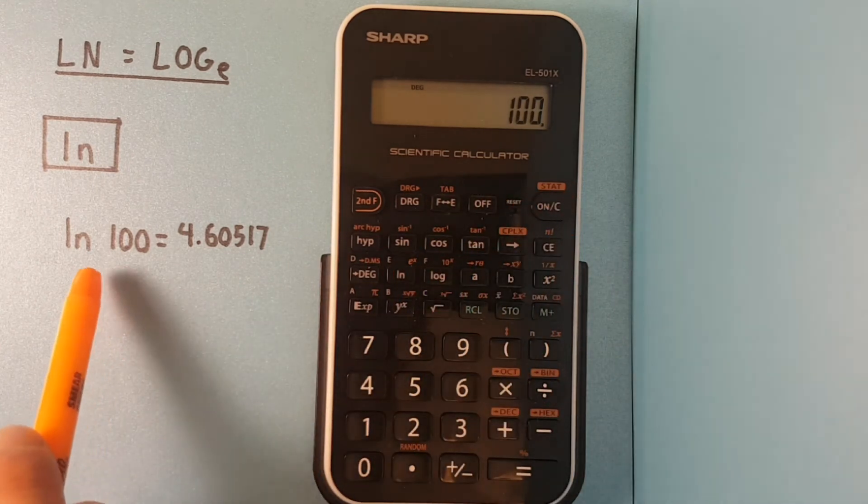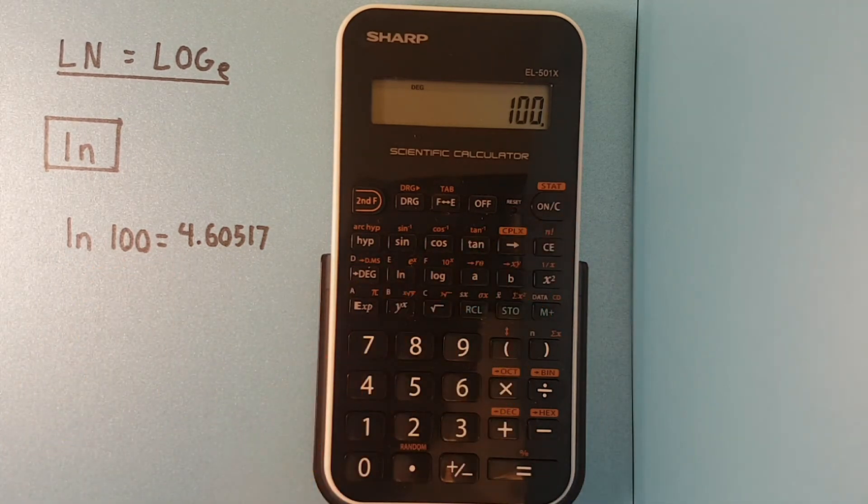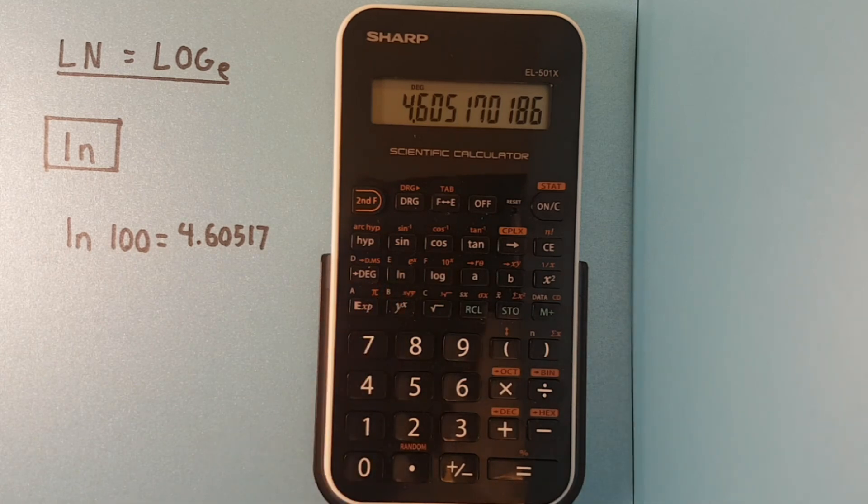In this example, we'll be solving for natural log of 100. So we have 100 on the screen, then press the ln key, and that gives us 4.60517, etc. All right, I hope this helps and good luck on those tests.